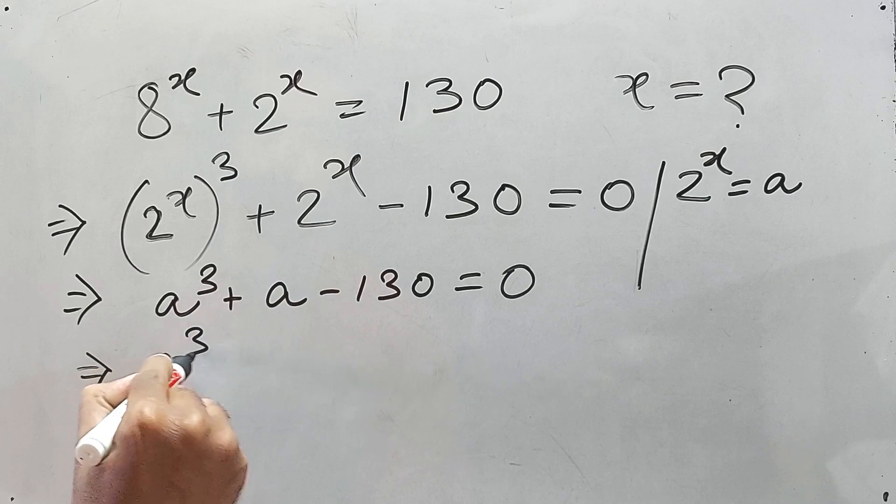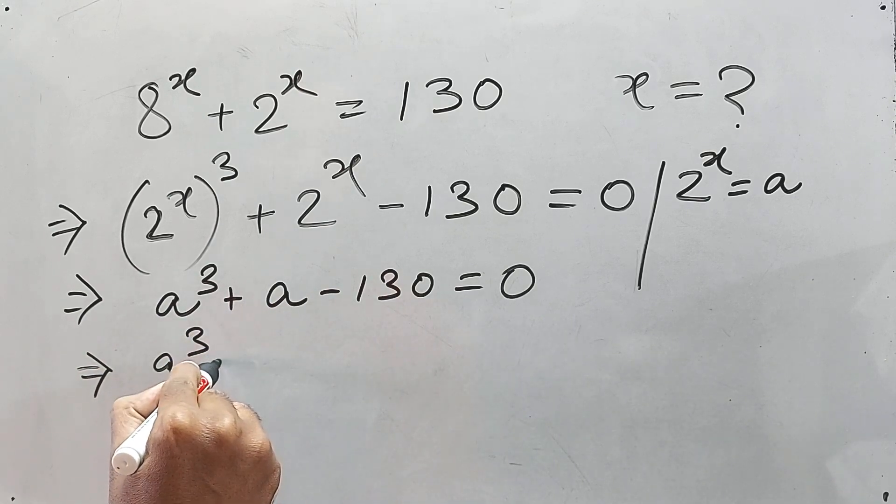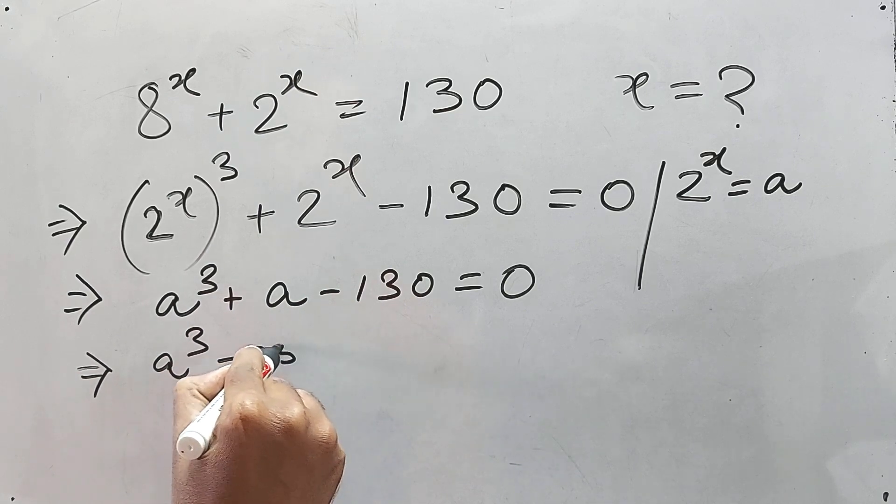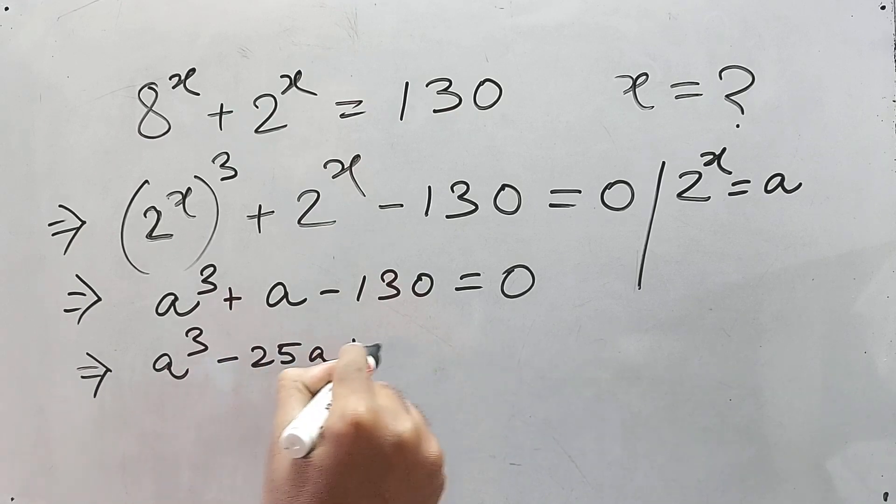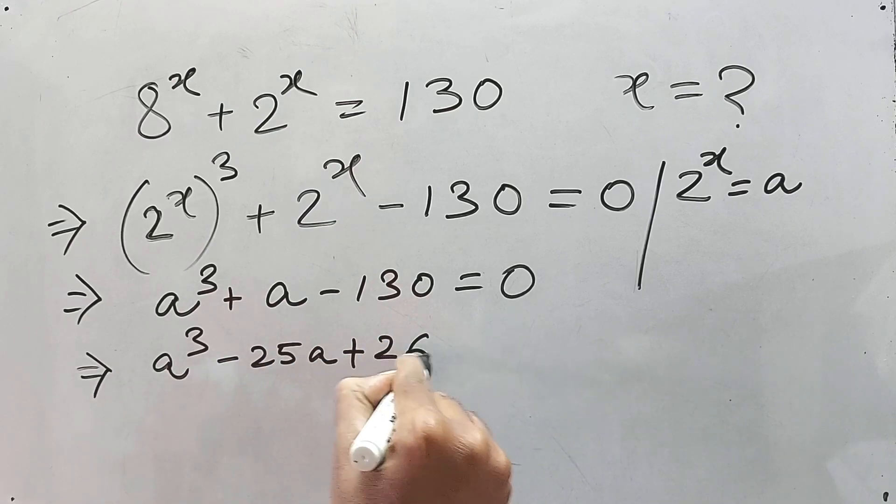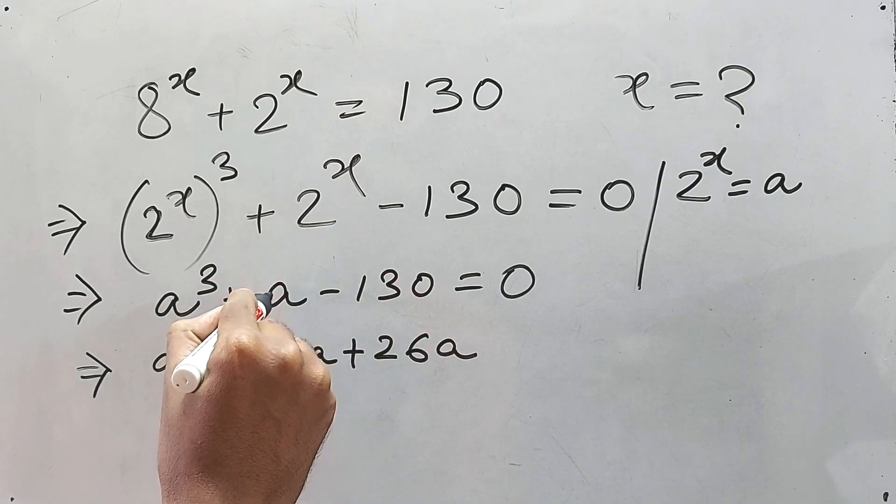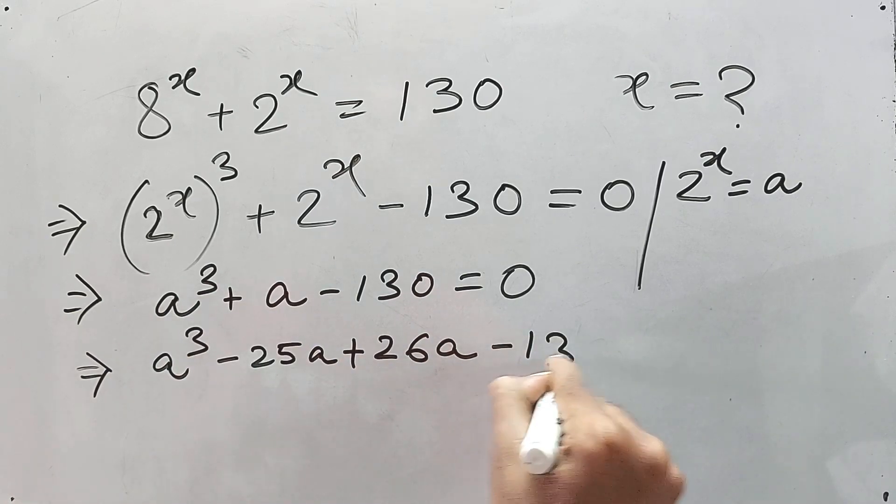So here, directly we can write like a cube and then, okay let's write the minus 1 first, plus 25a, I mean minus 25a plus 26a, okay, plus 26a. This is a, right? Plus a. This is plus a and minus 130, is it fine?